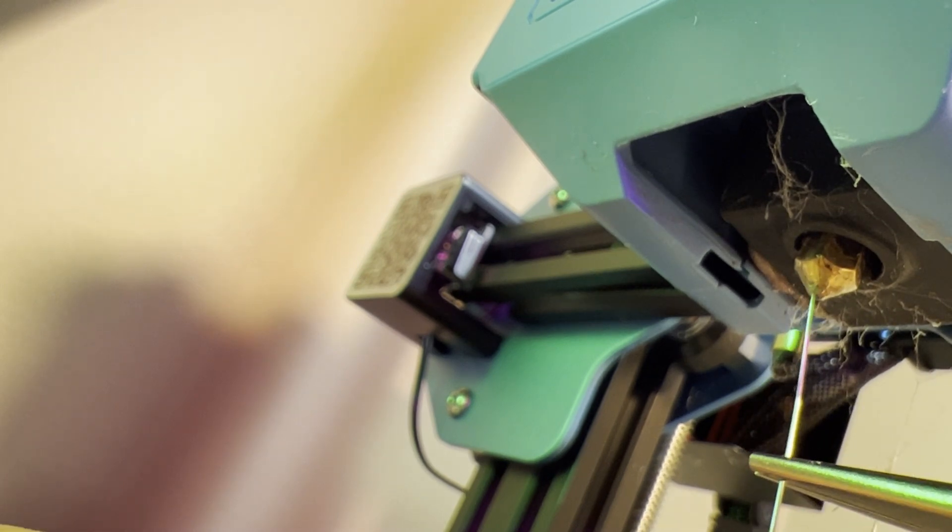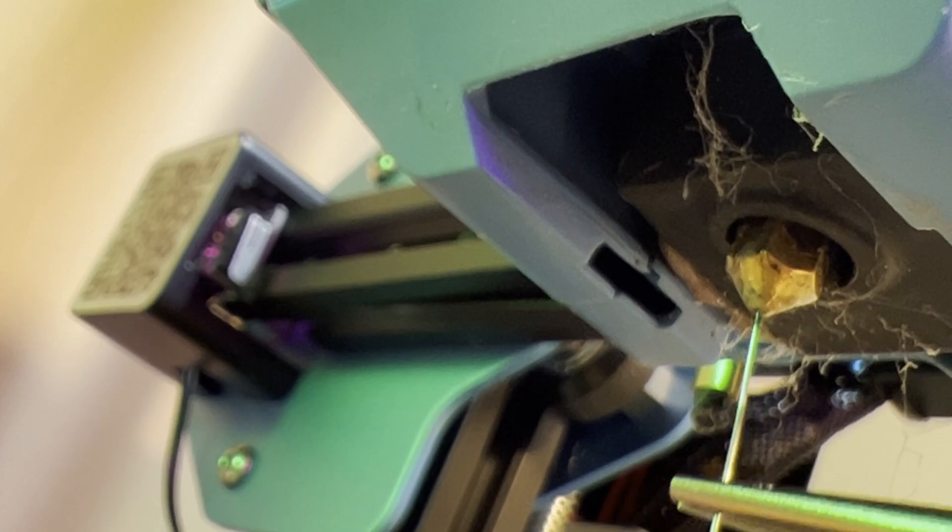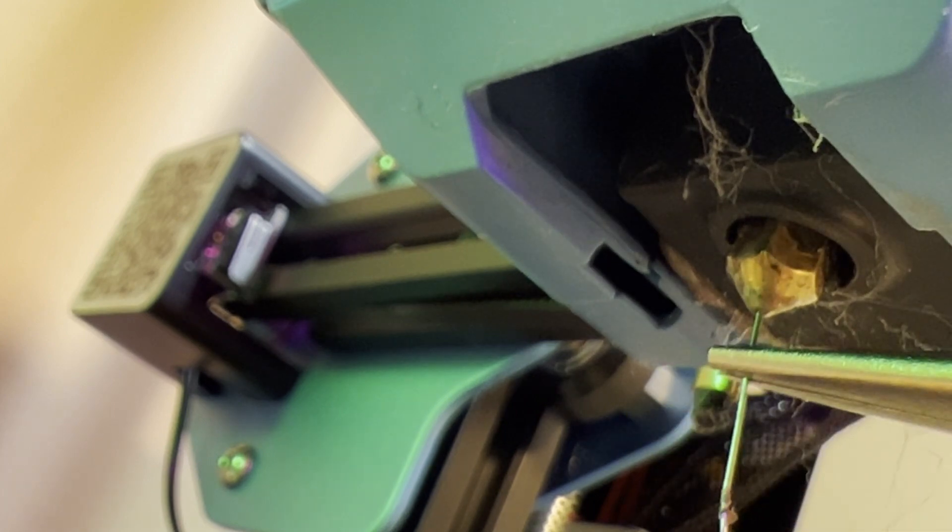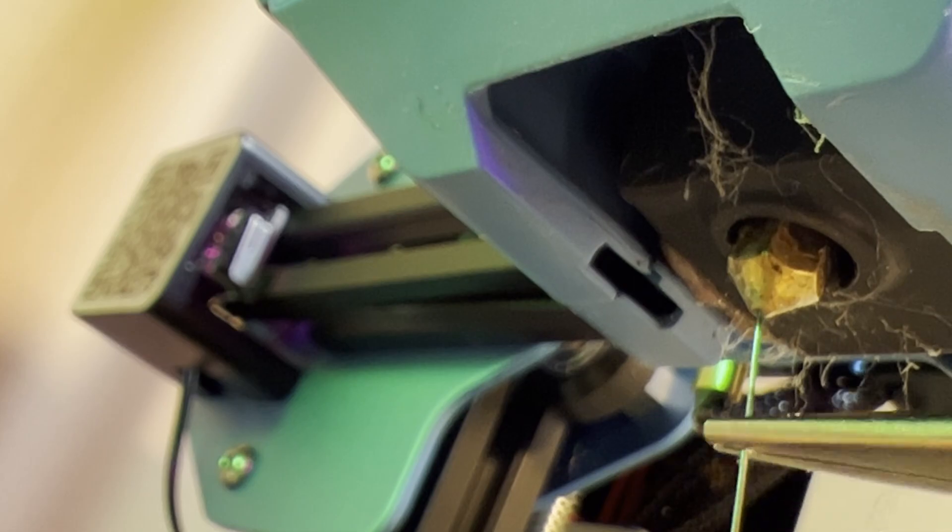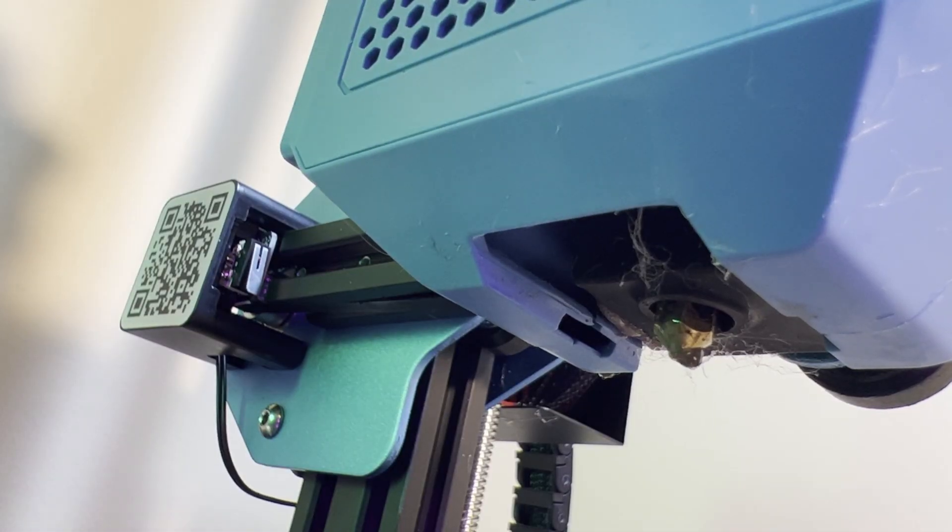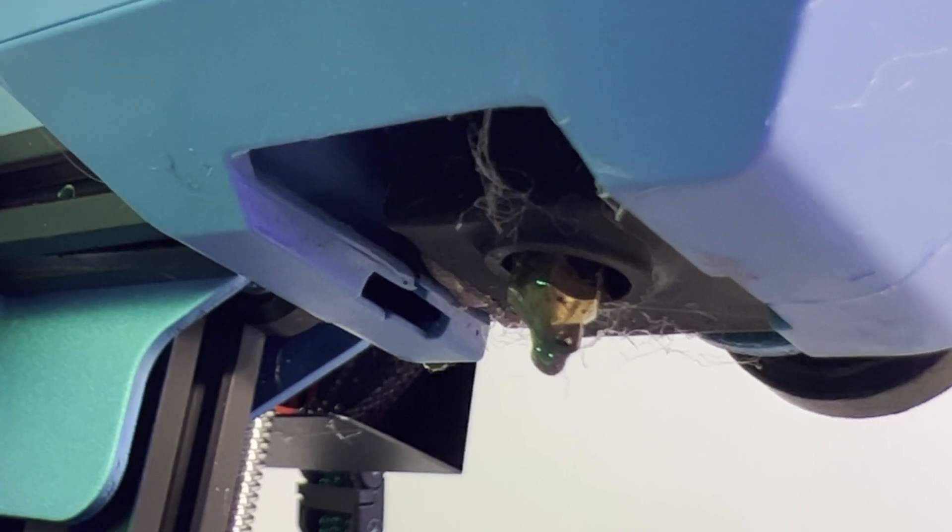All we're trying to do here is break up the blockage. So give it a few light pokes and try to push the filament through. Be careful not to stick the needle up too far. You can damage the PTFE tube inside or you're going to end up taking the whole thing apart. If you're successful, after a couple of tries, the blockage should be broken up enough to pass.